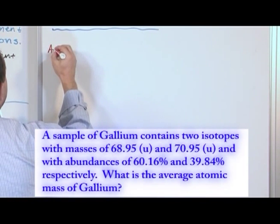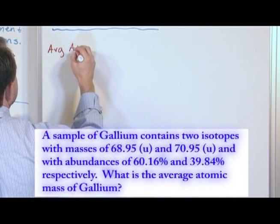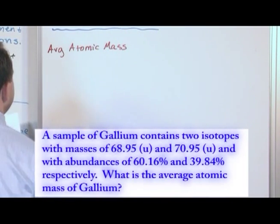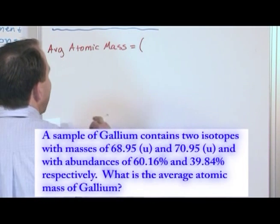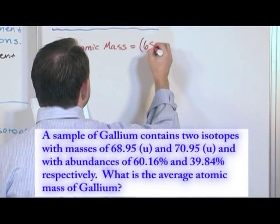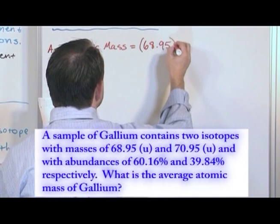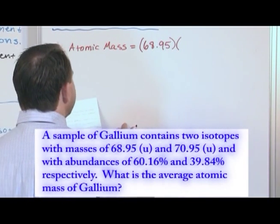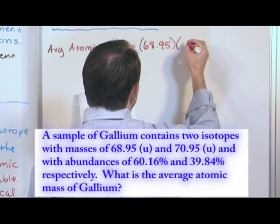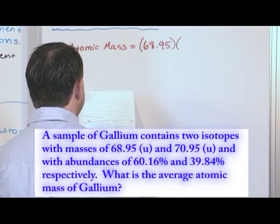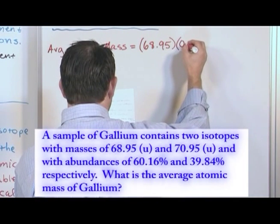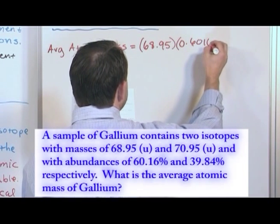The average atomic mass, the average atomic mass is equal to—now I'm going to write it down and then I'll explain it. So we have the mass of the first isotope, 68.95, times the percent abundance of this isotope. So we said it was 60.16%. So the way we're going to write it is 0.6016.